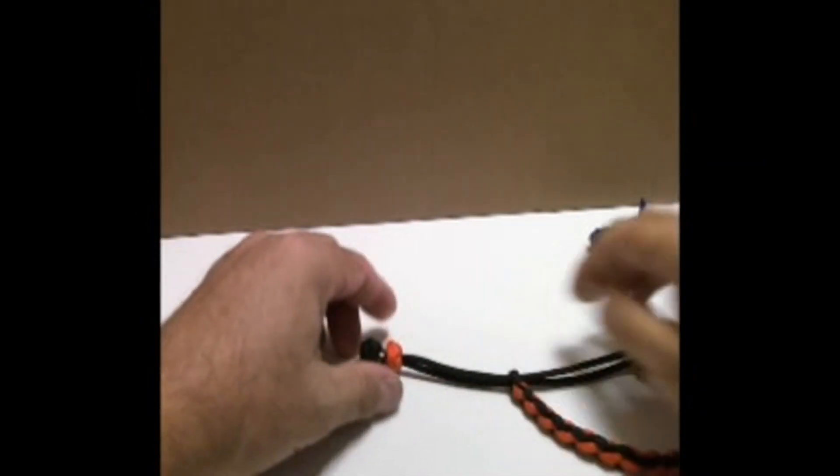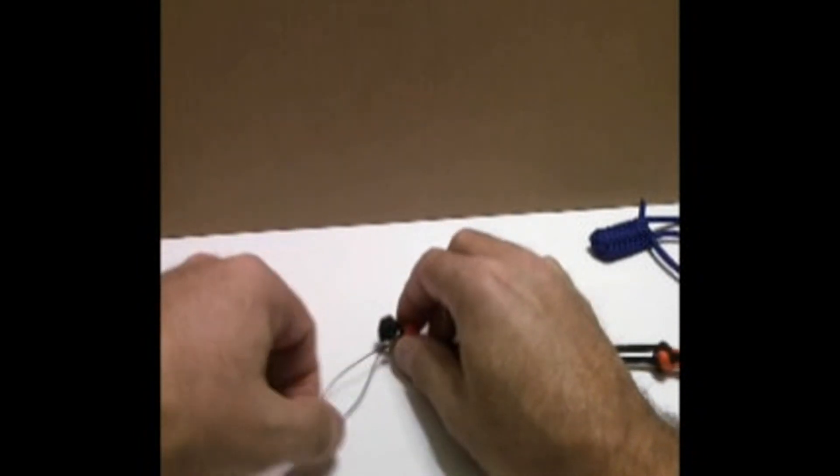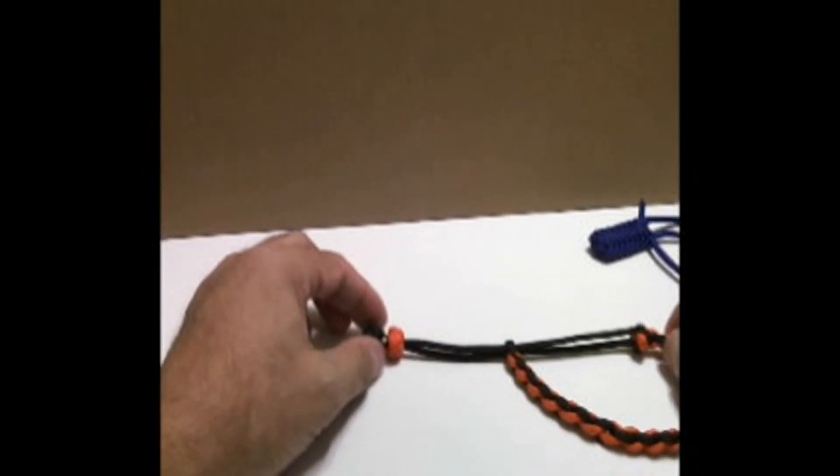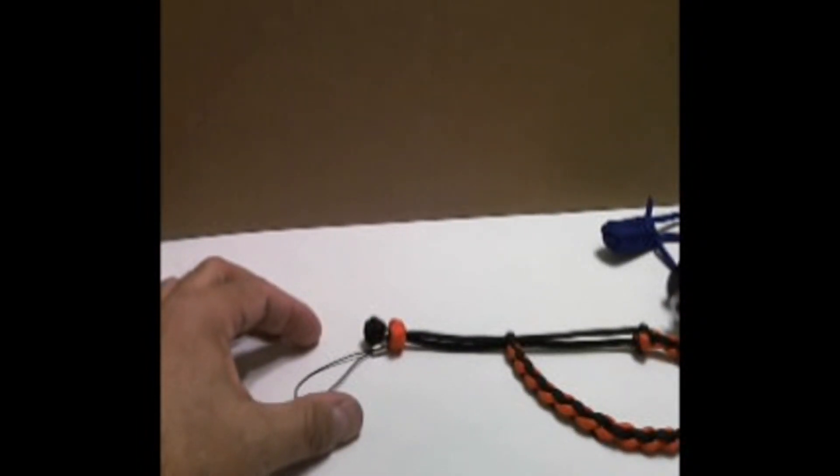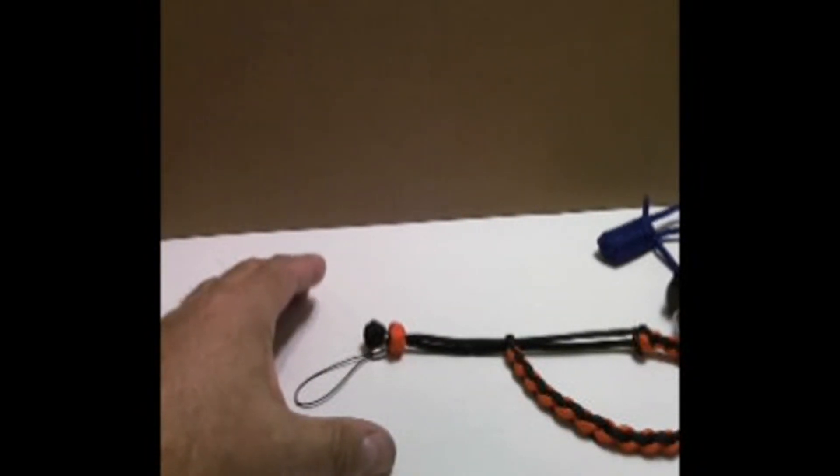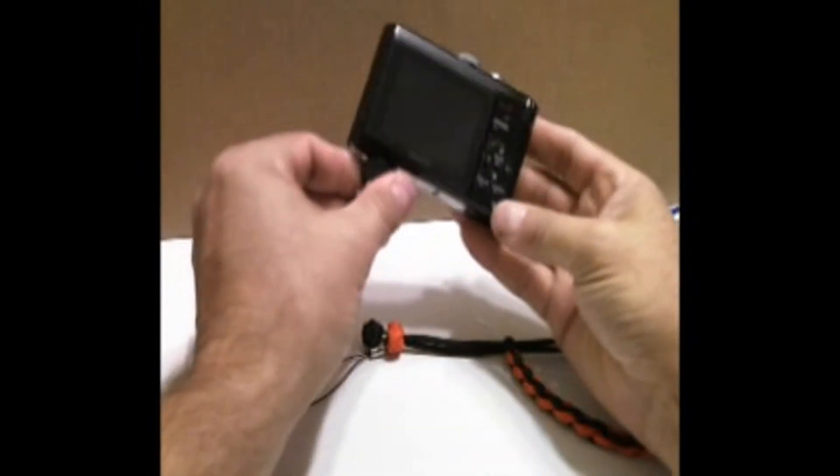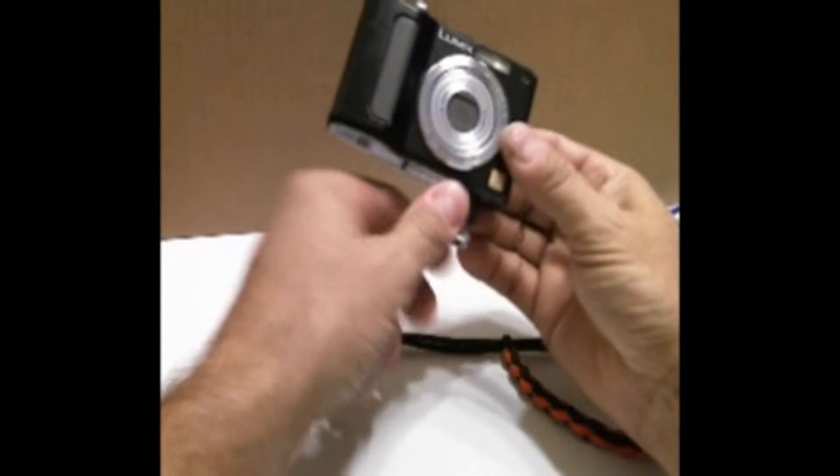This can be used for any electronic device - GPS, cell phones, cameras, thumb drives, just about anything you can think of that you want to have on your hand. But if you need to let go of it, you want to make sure it stays with you. In this case, we're going to install it on a camera.